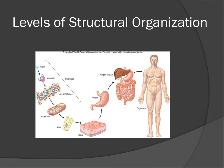Then you reach the tissue level — similar cells that perform similar functions. Then you get to the organ level — two or more tissues that work together to perform specific functions. Then you get to the organ system level — a group of organs that work together, and there are a total of 11 organ systems. In this course we'll go through each of those systems individually. And then once we have our organ systems, we reach an actual organism, which has all of these different levels comprised together.